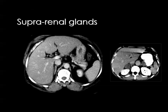We continue scanning the chest until we can see the suprarenal glands, because in bronchogenic carcinoma a common site of metastasis is the adrenal glands. Instructions are given to the technician to continue scanning until the suprarenal gland is visible — it appears like an inverted Y above the upper pole of the kidney. Bilateral metastatic deposits in the suprarenal glands from bronchogenic carcinoma can be demonstrated on CT.